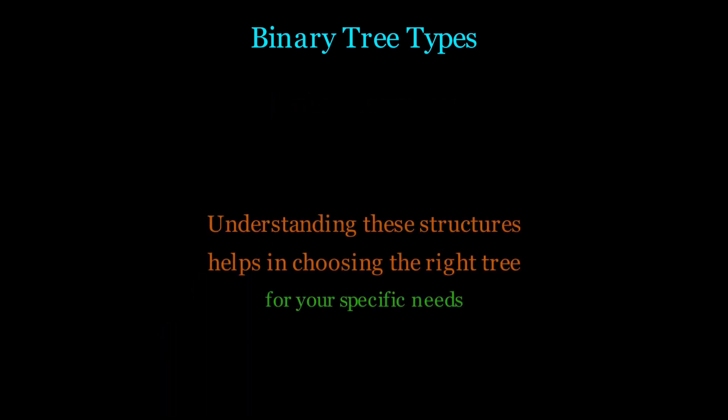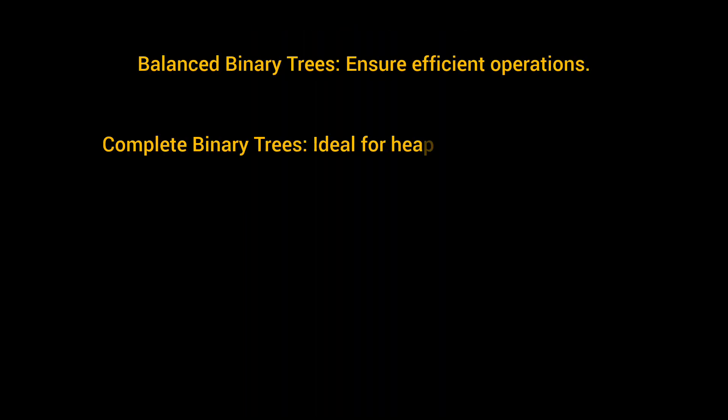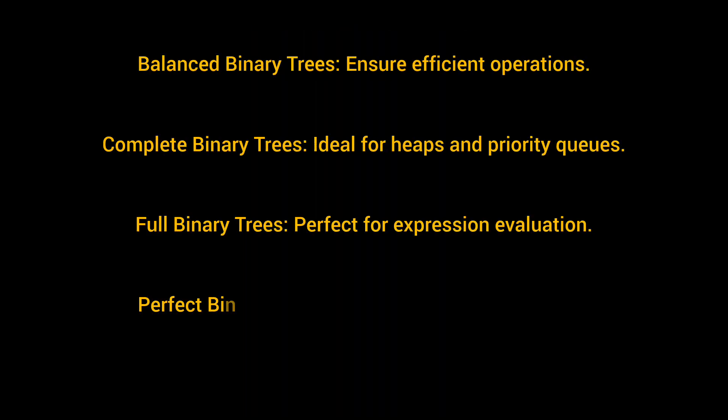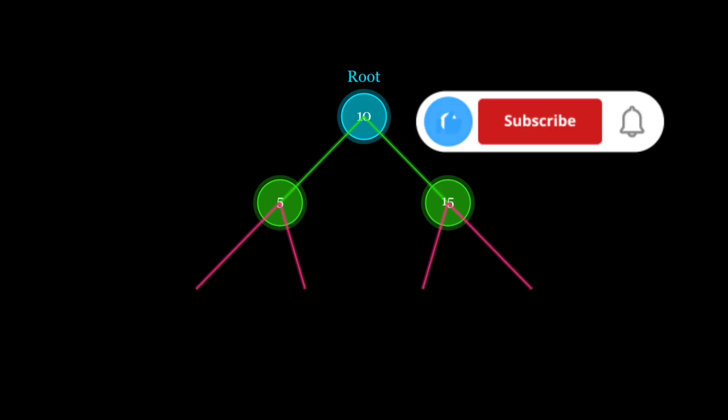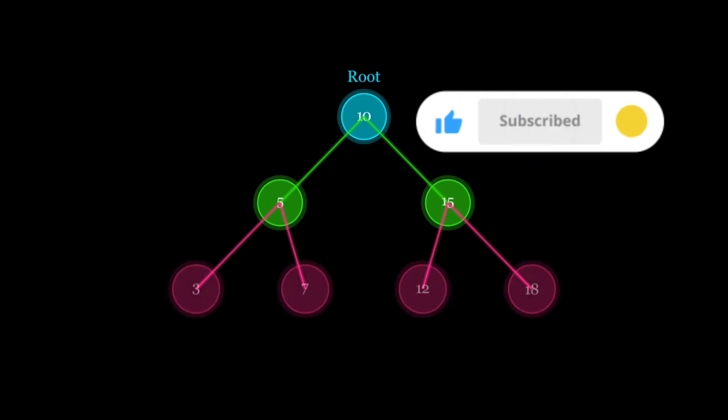To recap, each type of binary tree has its unique properties and use cases. Balanced binary trees ensure efficient operations. Complete binary trees are ideal for heaps and priority queues. Full binary trees are perfect for expression evaluation. Perfect binary trees represent the ideal structure. Choose the right tree based on requirements to unlock its full potential.